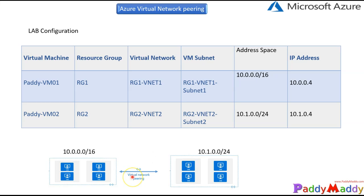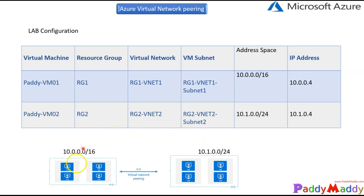First things first: we know that we can use VNet peering to create a connection between multiple different virtual networks. Let's say you have VNet one and VNet two — you can do that, and it can be cross-subscription or cross-region. We are actually trying to establish a connection with VNet peering from one isolated network to another isolated network.